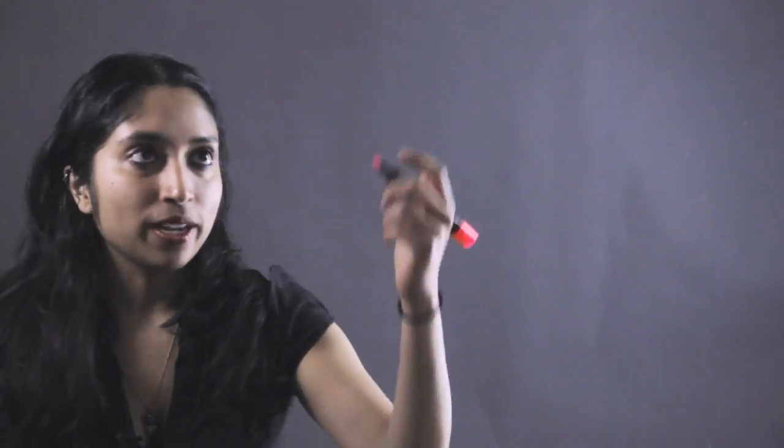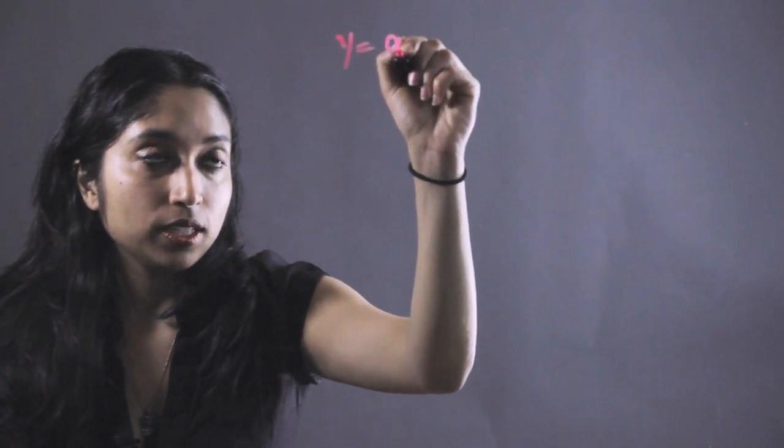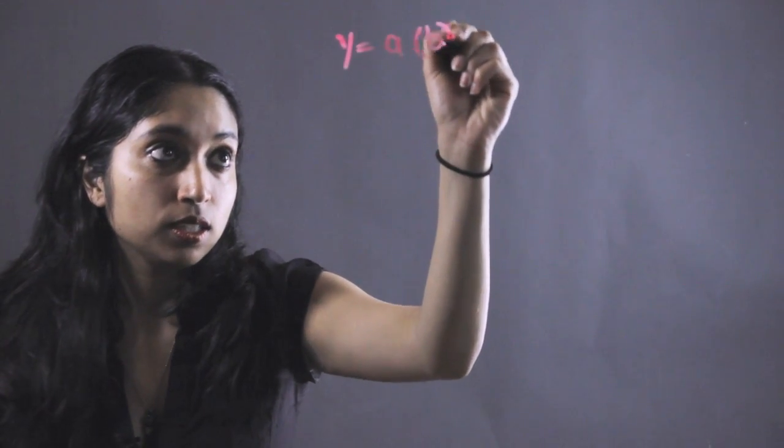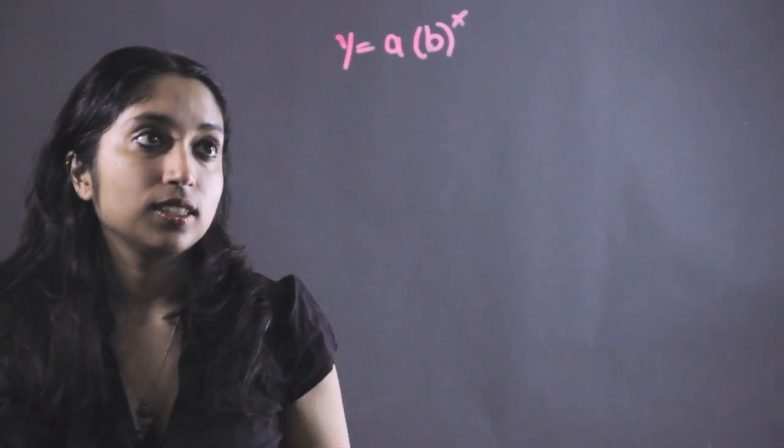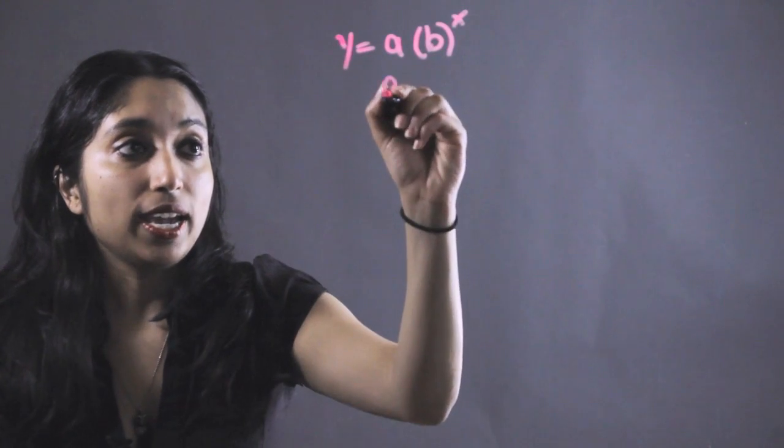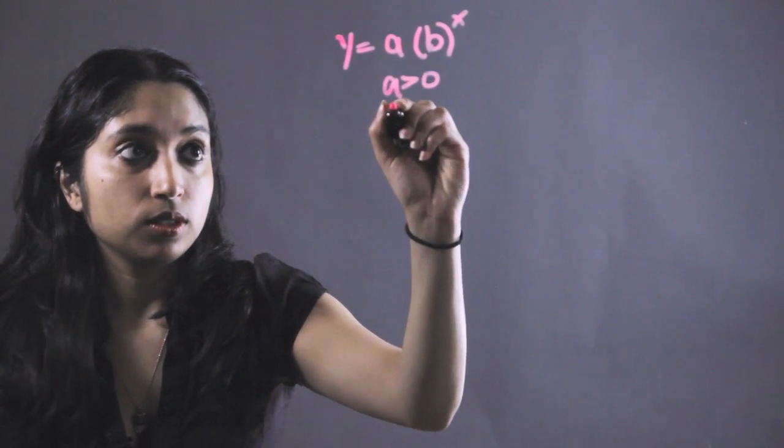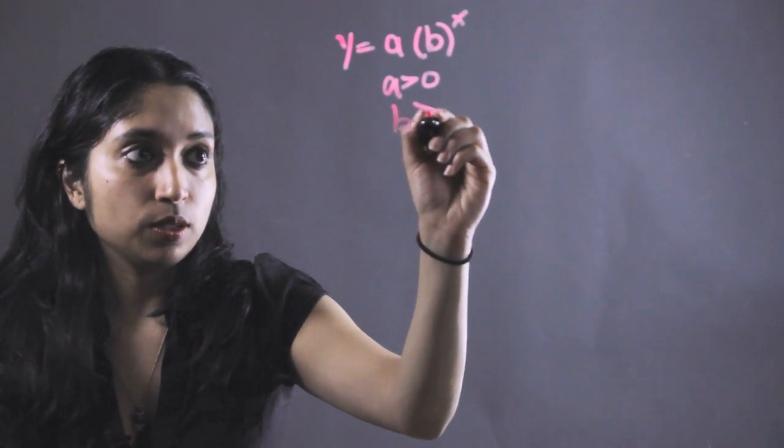So let's just write out a standard example of an exponential growth function. Y equals A times B to the X. And for it to be growth, A has to be greater than 0 and B has to be greater than 1.